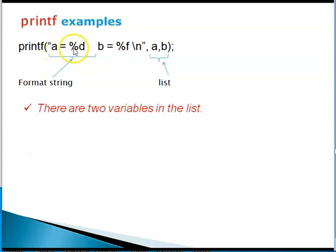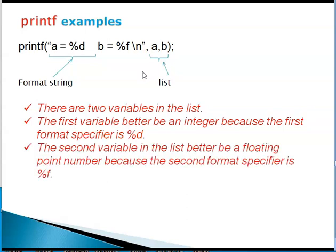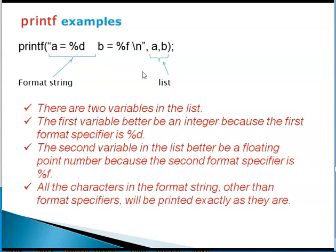Let us look at another example. You have a is equal to percent d, b is equal to percent f and a and b. This a and b are variables that are separated by comma. This is a comma separated list. Corresponding to each one of these, you have percent d and percent f. a is an integer variable, so you use a percent d. b is a floating point variable, so you use percent f. The first variable is a, second variable is b, so we use corresponding format specification.